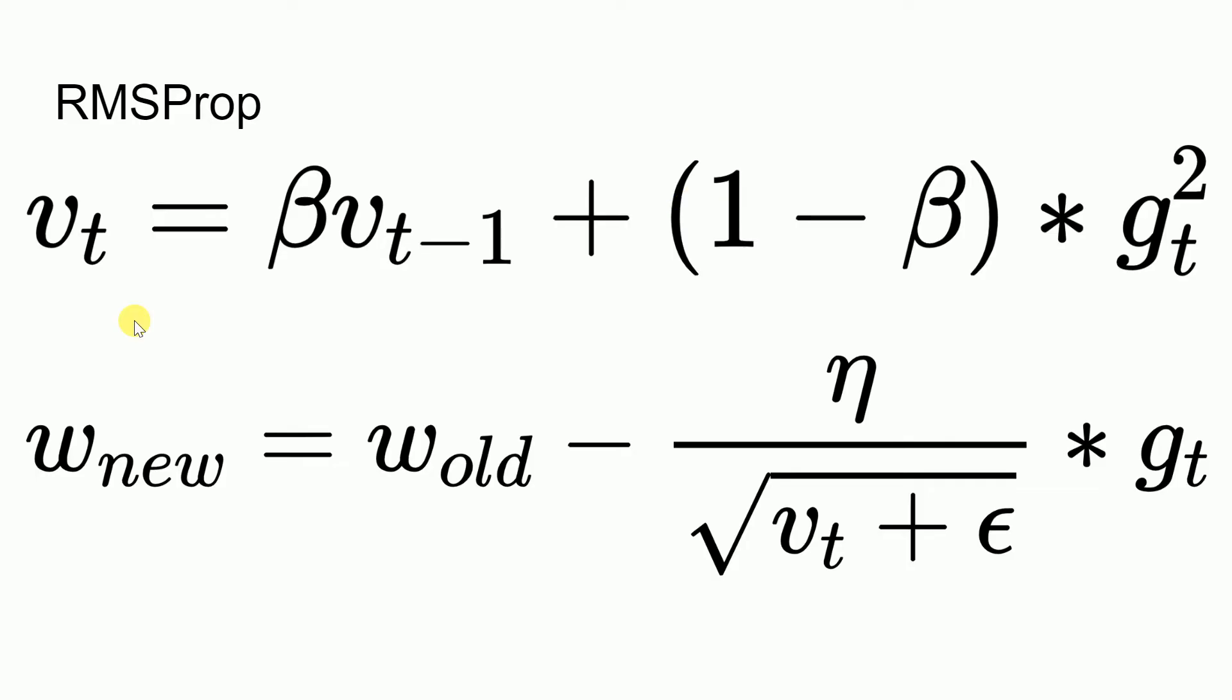Now that you've computed v of t, we will go forward and update the weights. So the way you update weights is w new equal to w old, which is your old weight, minus eta divided by the square root of v of t plus epsilon, where epsilon is a very small value. This epsilon term helps you compute the values even when v of t is zero. So we add a very small value in case of epsilon that is close to 10 to the power minus 8, and you have the v of t term in the denominator and you again multiply that with the cost value that is there.